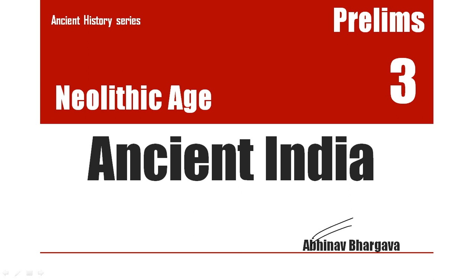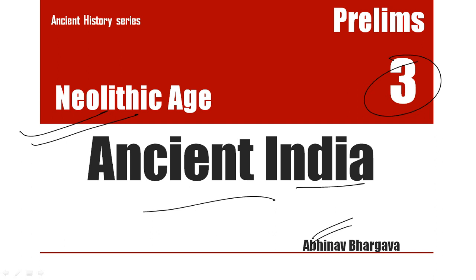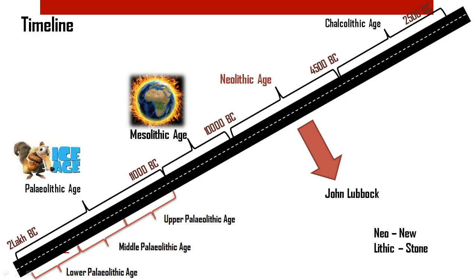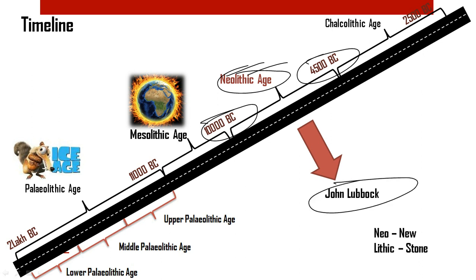Hello friends, this is Abhinav Bhargav and we are into the third part of the Ancient India series, that is the Neolithic age. The Neolithic age, or the New Stone Age, was the last phase of the Stone Age. This period was from 10,000 BC to 4,500 BC, and there was a great improvement in technology for making tools and other equipment. The term Neolithic was coined by John Lubbock.